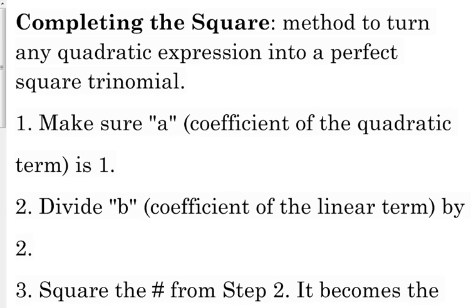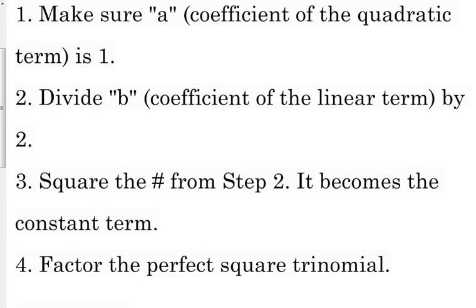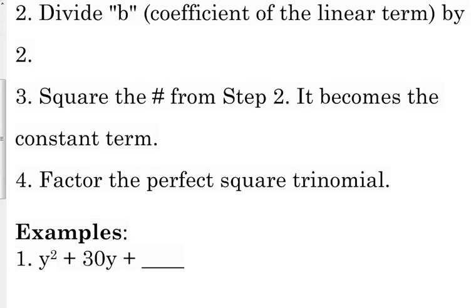After that, we're going to divide b, the coefficient of our linear term, or our just plain x, by 2. We're going to square that number, and we're going to add it to both sides when we get to the equation part. But that's going to become the constant term. And then we're going to factor the perfect square trinomial.